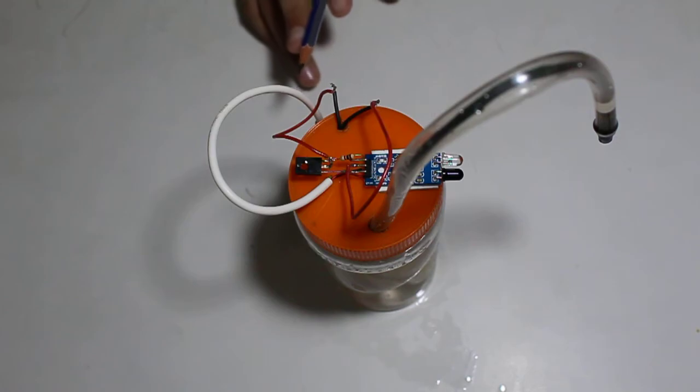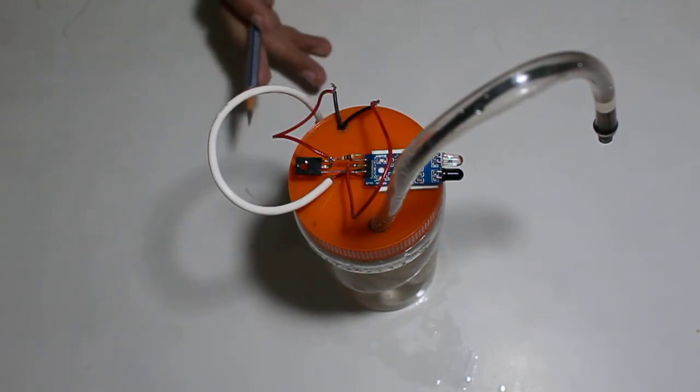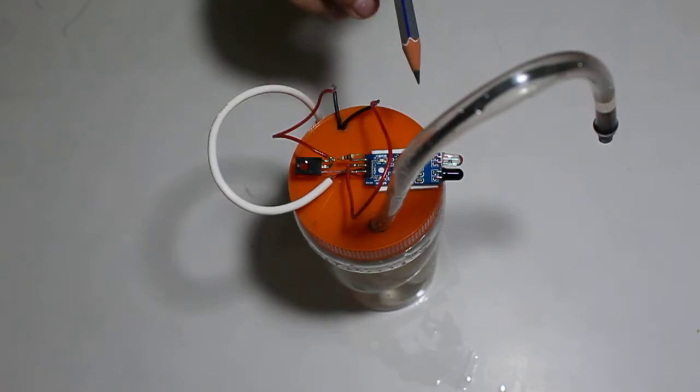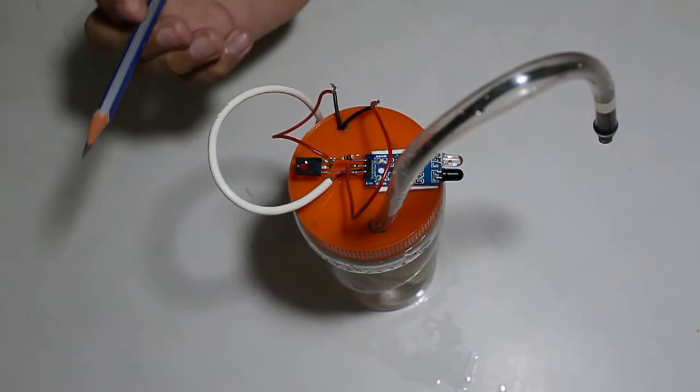So, focusing on point number 3, I have made a contactless soap/water dispenser. I have used an IR sensor. This will cost 40-50 rupees.